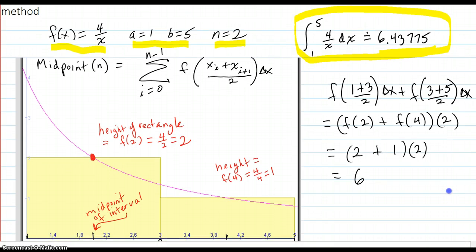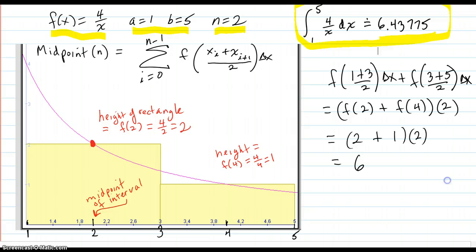So the midpoint method, what that does is you take the midpoints right here, the midpoint f values, and use that as your rectangle height.